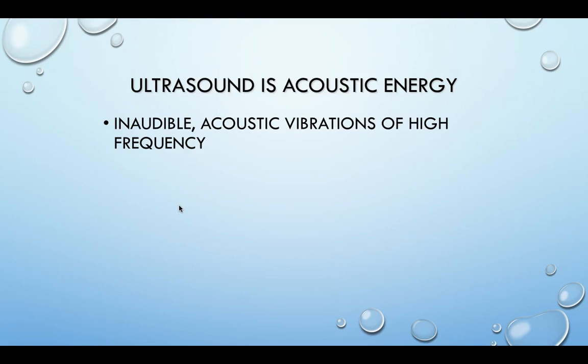Anything greater than 20 kilohertz is usually considered ultrasound. Therapeutic ultrasound tends to sit between frequencies of 0.75 and 3 megahertz, which is another way of saying cycles per second — one megahertz would be a million cycles per second. Within that range is FDA approved.